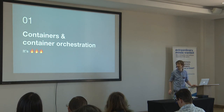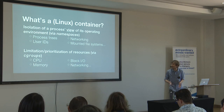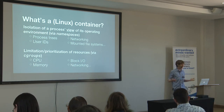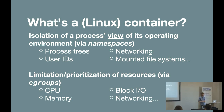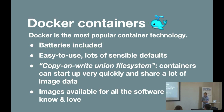Containers and container orchestration - they're quite fashionable at the moment. What is a Linux container, roughly speaking? Basically, it's a way of isolating a process's view of its operating environment using namespaces. A process can only see its own process trees, its own user IDs, its own networks - it basically has its own world. We also want to limit and prioritize resources, so we can define limits on CPU or memory. Docker is just an implementation of container technology, probably the most popular. It caught on because it was one of the first container technologies that was very easy to use and included a lot of functionality out of the box. It has this fancy thing called a copy-on-write union file system, which means containers can start up very quickly and share a lot of image data between each other.